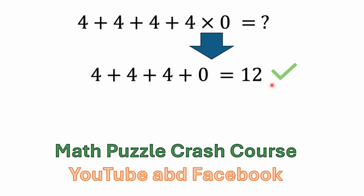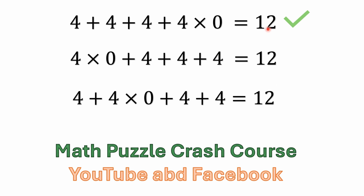Now, a lot of people are going to say, "I read sentences left to right when I'm reading a book. Why isn't the multiplication written first if it's going to be done that way?" Well, the truth is, it doesn't matter. Because of the order of operations, you can write the multiplication first. 4 times 0 plus 4 plus 4 plus 4 is 12 — it's the same thing as 4 plus 4 plus 4 plus 4 times 0, or 4 plus 4 times 0 plus 4 plus 4. All equal 12.